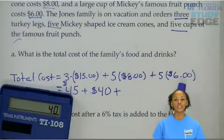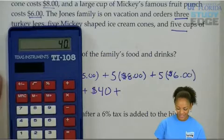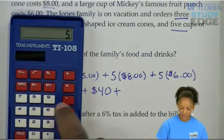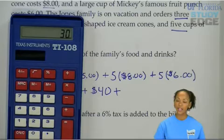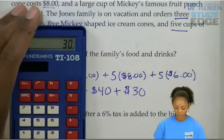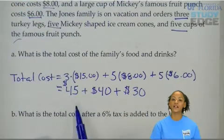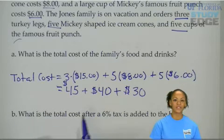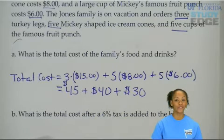Plus, let's determine how much they spent on the famous fruit punch. They bought five of them, and each of them are $6.00. So we do five times six, and that gives us $30.00. So they spent $45.00 on the turkey legs, $40.00 on the Mickey-shaped ice cream cones, and $30.00 on the famous fruit punch.